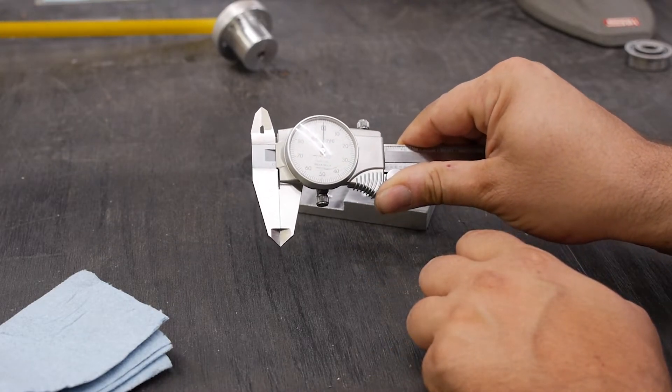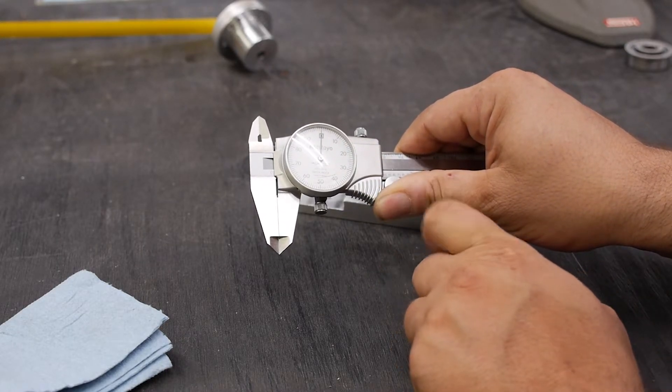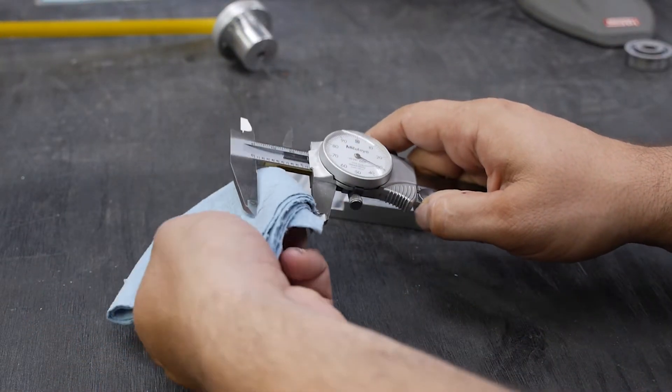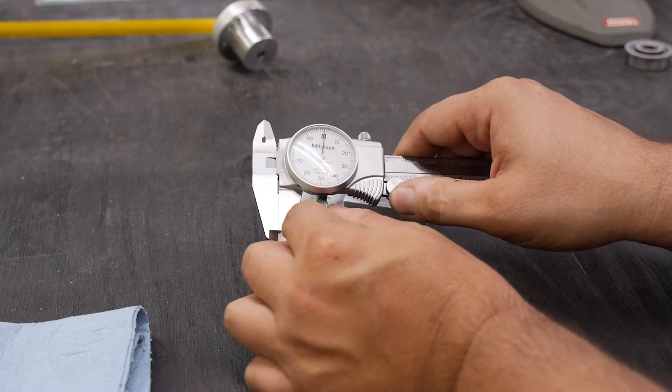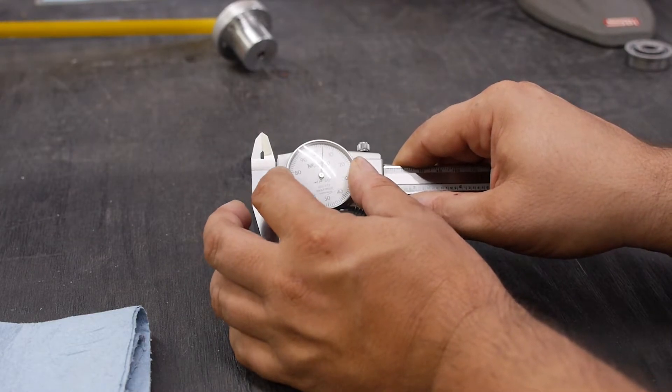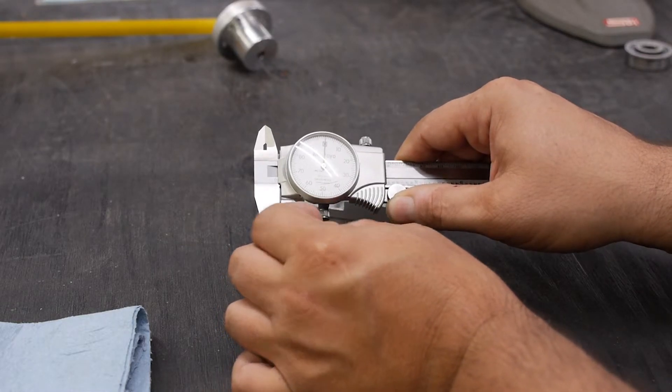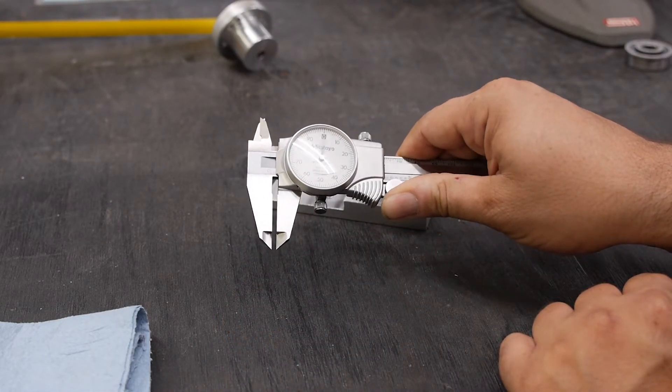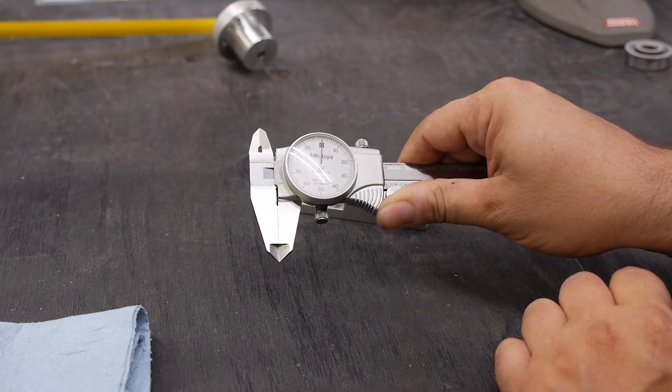Next, you want to gently close the calipers and make sure that the needle on the dial indicator returns to the zero. I like to open and close them gently two or three times to make sure that it repeats well. If the needle does not return to zero, clean the jaws a second time, re-close, and if necessary, loosen the bezel lock screw, rotate the bezel to the zero indicator position, and then re-secure the lock screw. This process is called zeroing the calipers.